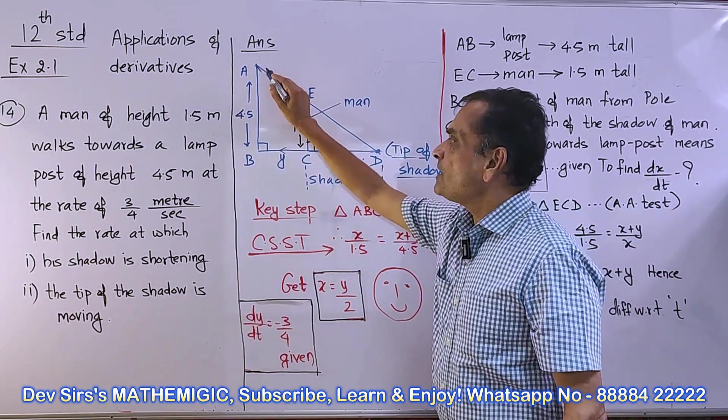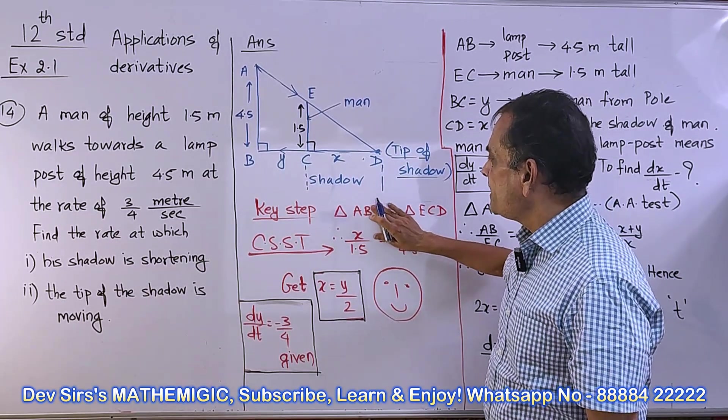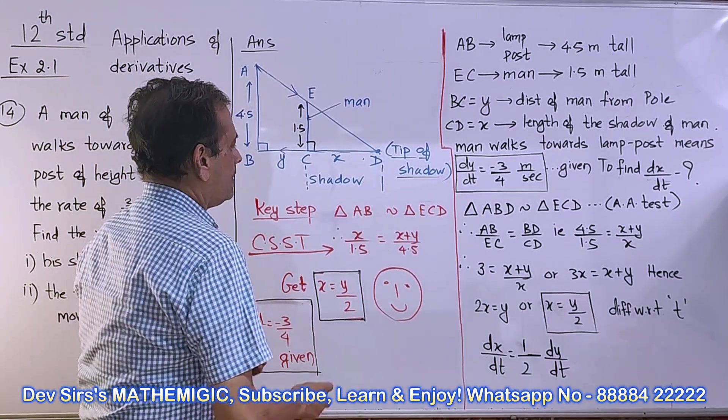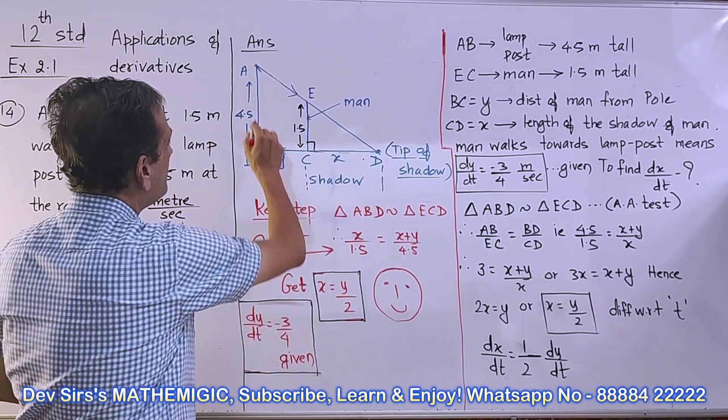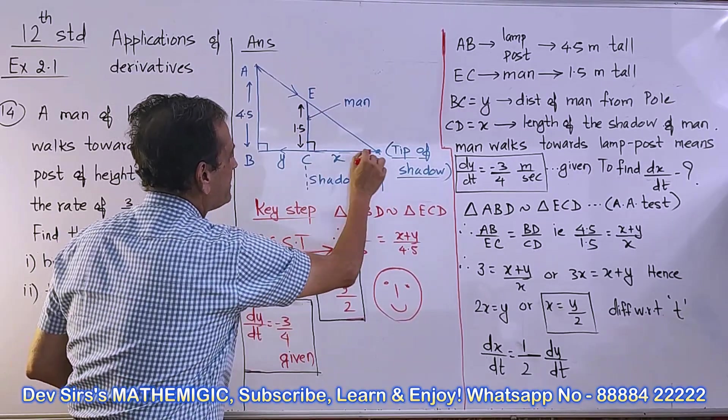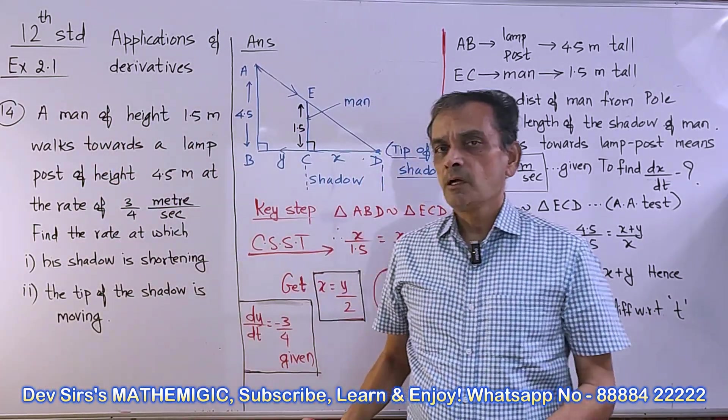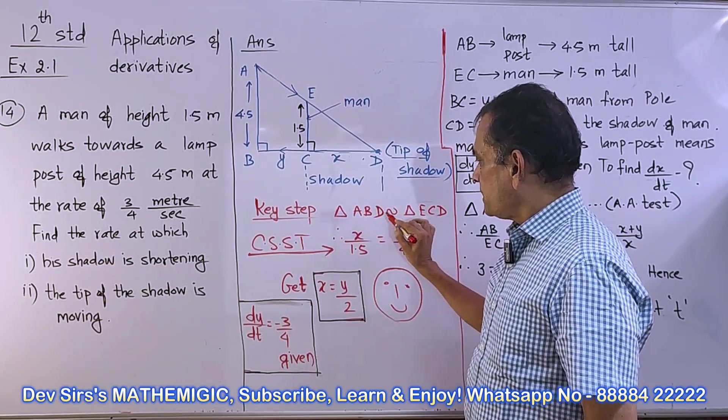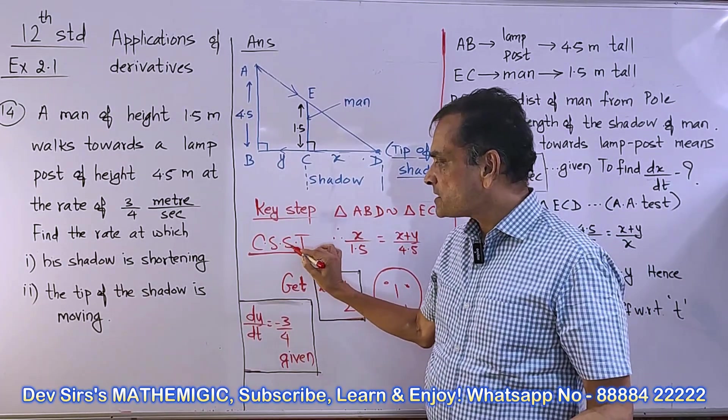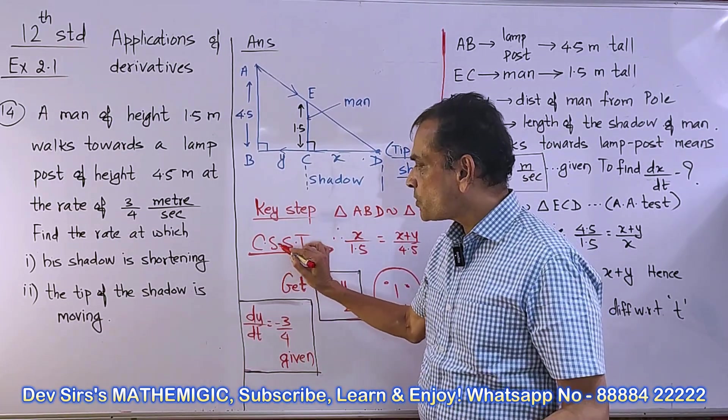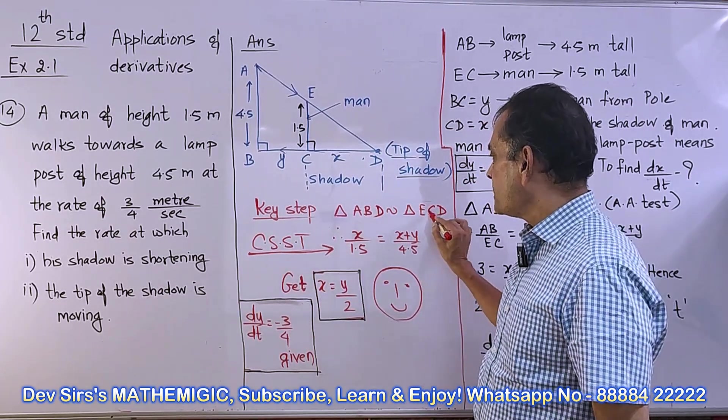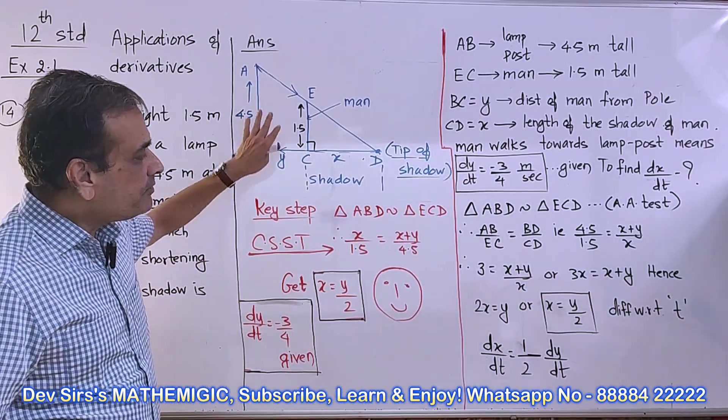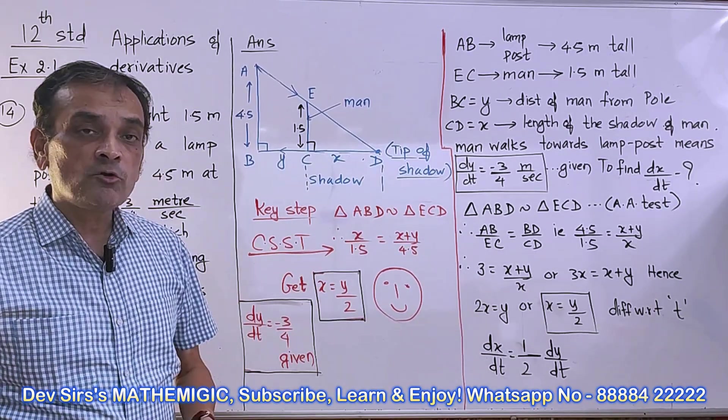Now the key step: we have to show triangle ABD similar to triangle ECD. In 10th standard we learned how to show them similar. After showing them similar, write corresponding sides of similar triangles, which we call CSST. Why do we show the geometry? Because we have to form an equation.